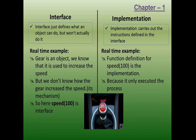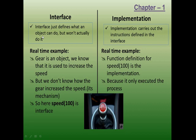What is the interface and what is the implementation? Interface just defines what an object can do but won't actually do it. An object is a thing which has characteristics and behavior. For example, a pen is an object — it has characteristics like being white in color with a red cap, and its behavior is that it is used to write.